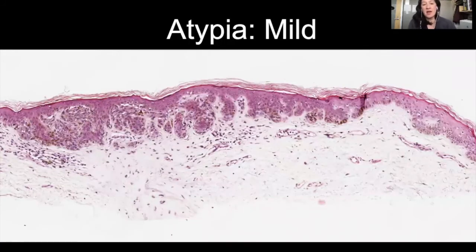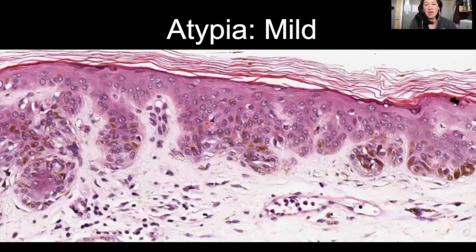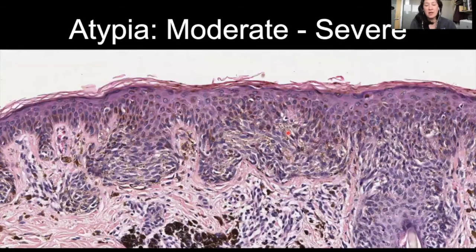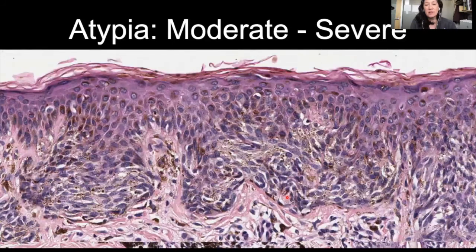Here's an example of a mildly atypical melanocytic nevus, mostly junctional, showing some nests at the tips of the rete ridges with a little bit of fusion between rete ridges. On higher power, these melanocytes are about the same size or a little smaller than the neighboring keratinocyte — so this would be mild cytologic atypia. Here's one that's a little worse, more moderate to severe, showing more extensive fusion between rete ridges and some extension down the follicular epithelium. On higher power, these melanocytes are spindled and there are some visible nucleoli.